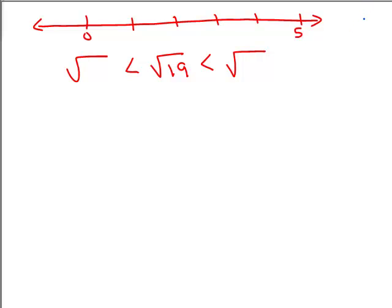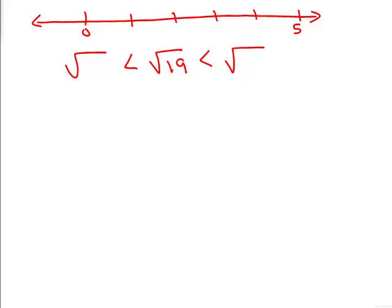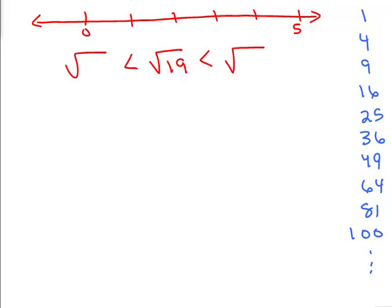Of course, you have to know your perfect squares. Starting with 1 squared, then 4, 9, 16, 25, 36 — 5 squared, 6 squared, 7 squared, 8 squared, 9 squared, et cetera. Now, 19 is between which two of those numbers? It's in between 16 and 25. The number 19, which is underneath the square root, is in between 16 and 25. Therefore, the square root of 16 is less than the square root of 19, which is less than the square root of 25.